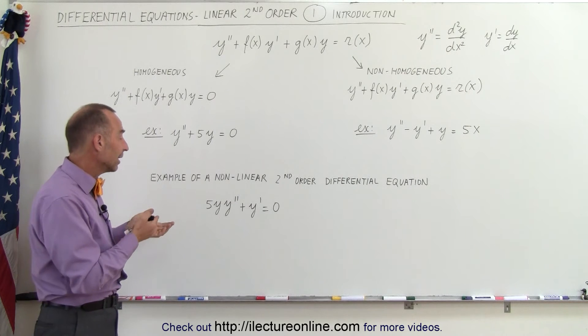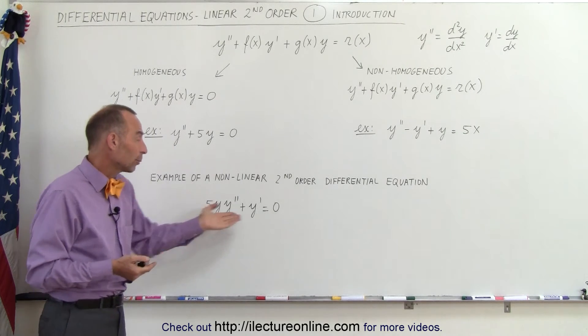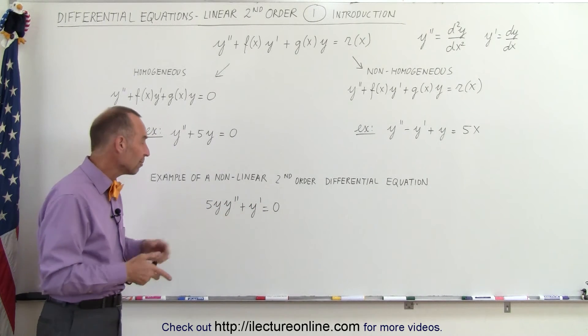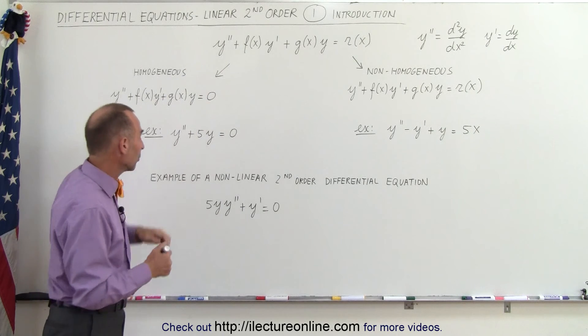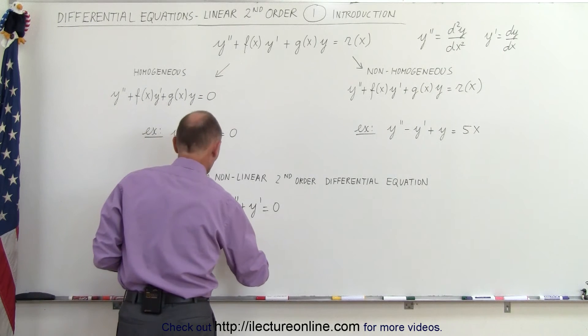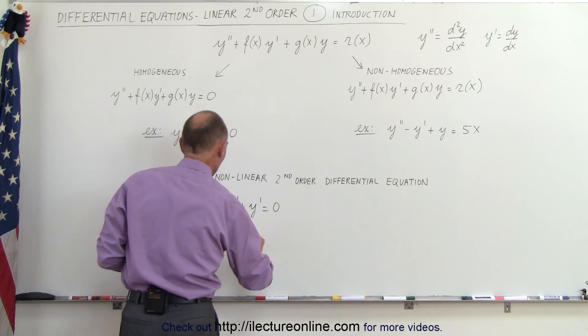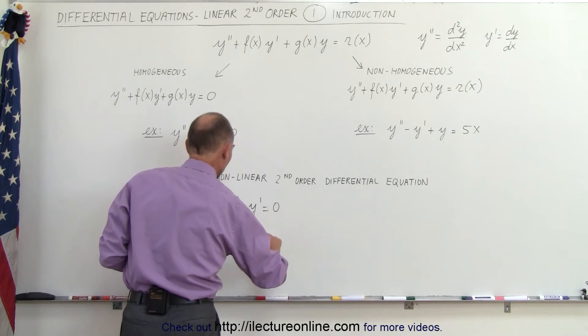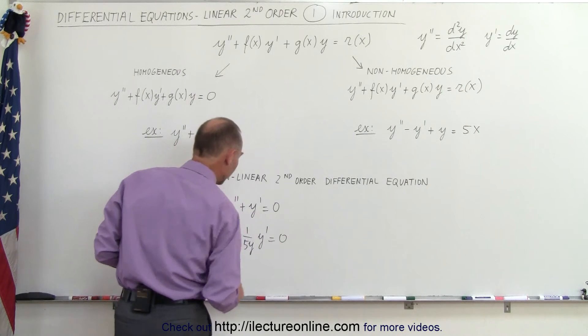And so therefore, if I want to rewrite that, for example, if I'm going to divide both sides of the equation by 5y so I can isolate y prime, this would turn into y double prime plus 1 over 5y times y prime is equal to zero.